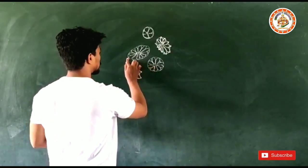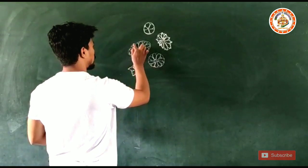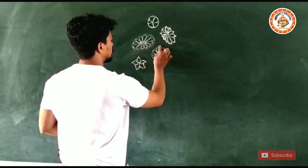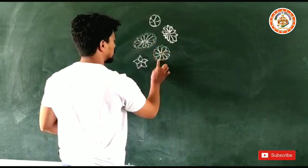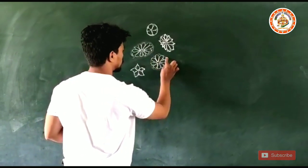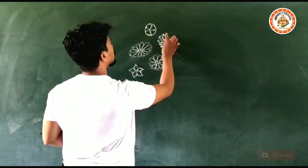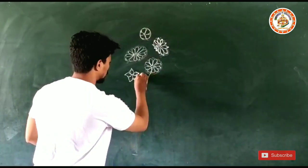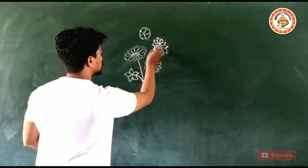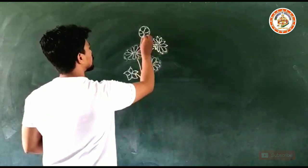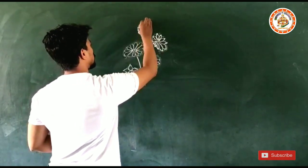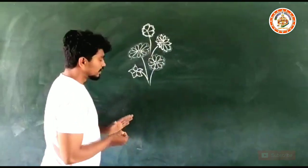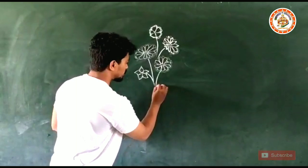Then you can erase the flower. Then you can see the flower. The flower is going to be safe. Then you just move it slightly. Then you can expand on the flower.